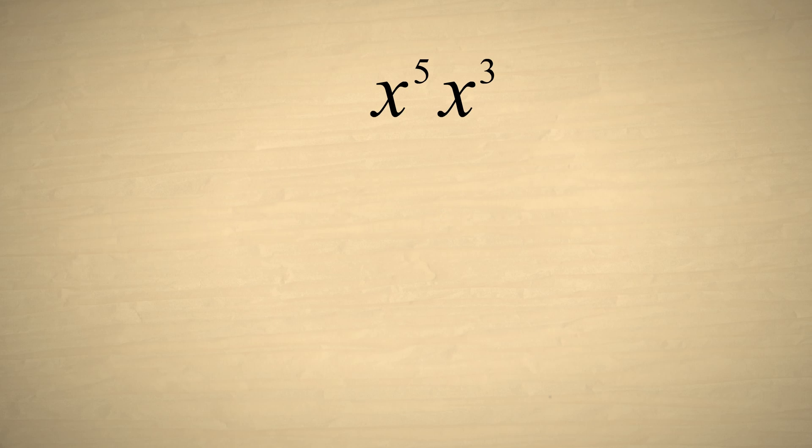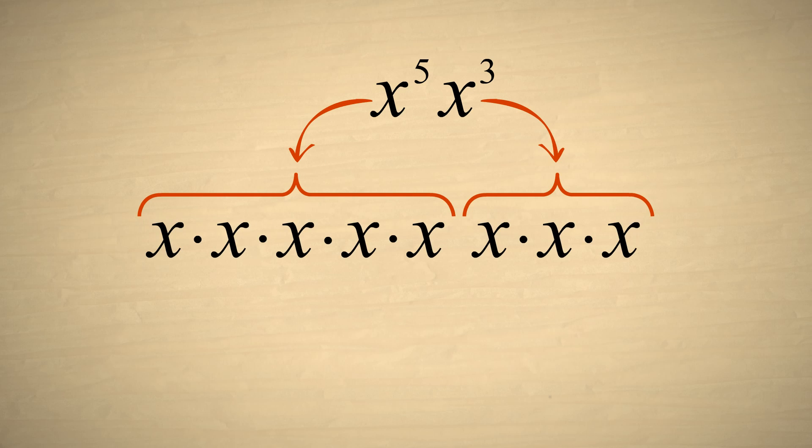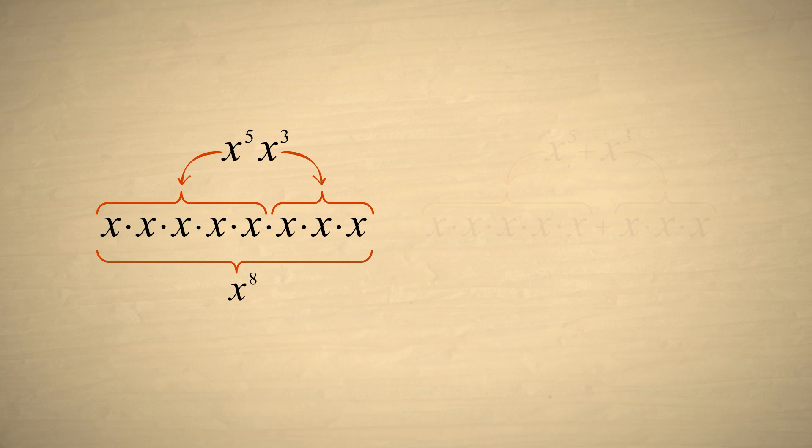It is important to remember that we can only add exponents when the terms are multiplied. If these two terms were added instead of multiplied, there would be no way to simplify this expression any further.